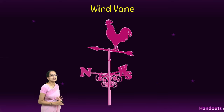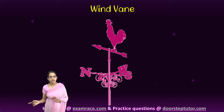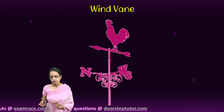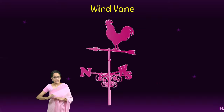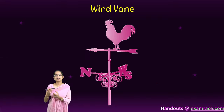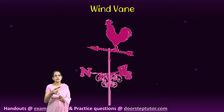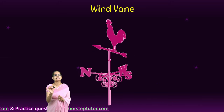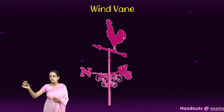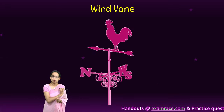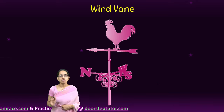Wind is measured in two ways: direction and speed. Direction is measured through a wind vane — a simple instrument with four fixed cardinal directions (north, south, east, west) and a rotating arrow with a tail. When the wind blows, it affects the tail and the wind vane rotates. The direction it points tells us from where the wind is coming. If it is northeast, the wind is coming from northeast going toward southwest.